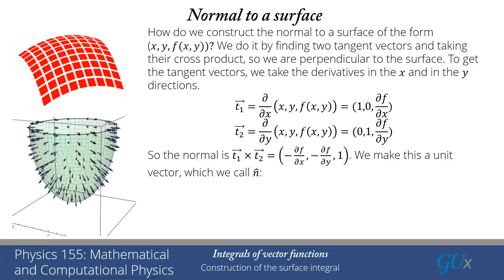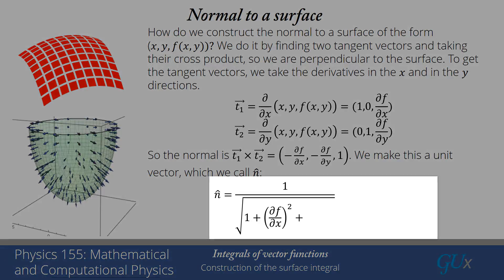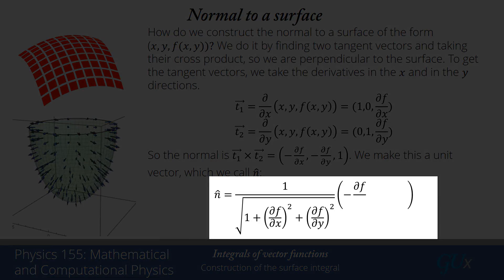To make it a unit vector, I divide by the length of that vector — multiplying by 1 over the square root of 1 plus (df/dx)² plus (df/dy)². This is reminiscent of what we did with arc lengths, but we have two terms here because we have two directions in which we see areas, making it slightly more complicated than just the arc length formula.